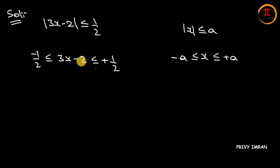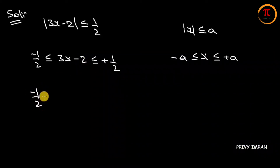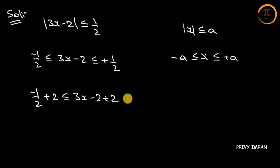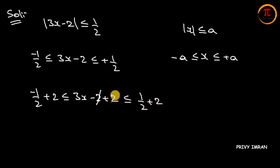Since minus 2 is present, let me add plus 2 on both sides. Then minus 1 by 2 plus 2 is less than or equal to 3x minus 2 plus 2 is less than or equal to 1 by 2 plus 2. The minus 2 and plus 2 cancel, and simplifying gives 3 by 2.